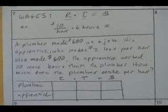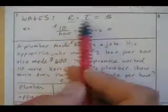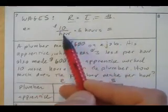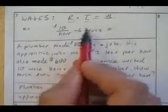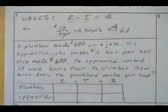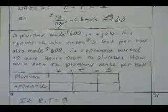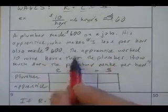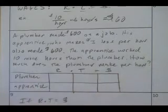When you're doing wages problems, remember. Your rate times time is the money earned. That's how much you're getting per hour. For instance, if you work $10 per hour times 6 hours, the hours cancel out, you get 60 bucks. A plumber makes $600 on a job. His apprentice makes $3 less per hour, also makes $600. The apprentice worked 10 more hours than the plumber.